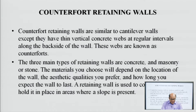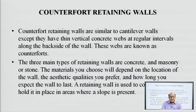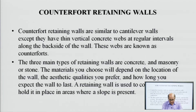The three main types of retaining wall materials are concrete, masonry, and stone. The material chosen depends on the location of the wall and the aesthetic qualities preferred. A retaining wall is used to contain soil and hold it in place in areas where a slope is present.